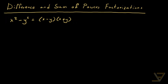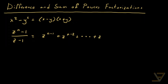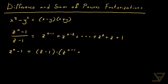We're going to be gaining some inspiration from the sum of a geometric series. Recall that it says that z to the power of n minus 1, divided by z minus 1, is equal to z to the power of n minus 1 plus z to the power of n minus 2, all the way down to z squared plus z plus 1. If we clear the denominator, what we get is that z to the power of n minus 1 is equal to z minus 1 times z to the power of n minus 1 plus z to the power of n minus 2, all the way down to z squared plus z plus 1.